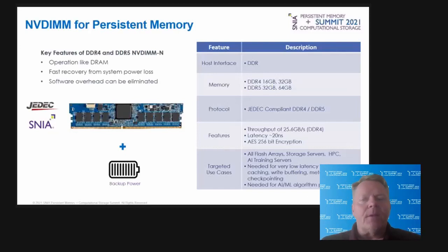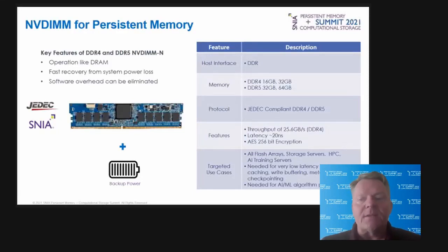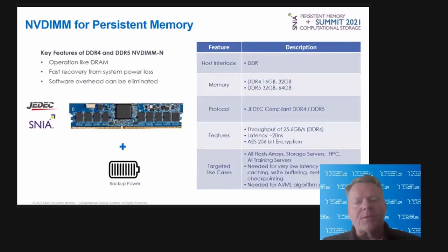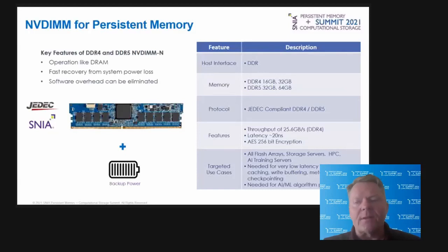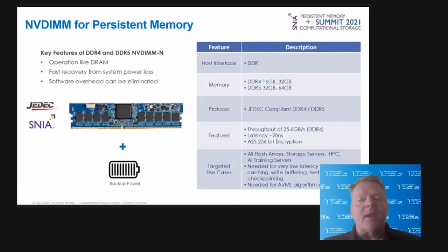Then we have the NVDIMM. NVDIMMs have been the enabling modules helping to drive the adoption of persistent memory. NVDIMMs operate the same as registered DIMMs and add high-speed byte-addressable persistence into main memory. NVDIMMs are used in all-flash arrays, storage servers, high performance computing platforms, and AI training servers. They are needed for very low latency tiering, caching, write buffering, metadata storage, and checkpointing. NVDIMMs are also used for AI and machine learning algorithm processing, which accelerates performance by not having to move the algorithms to flash while they're being developed. NVDIMMs are JEDEC standard modules, and specification development is currently underway for DDR5 JEDEC standard NVDIMMs, providing yet another persistent memory form factor option going forward.